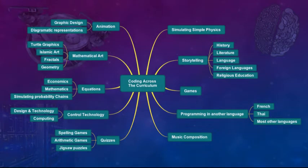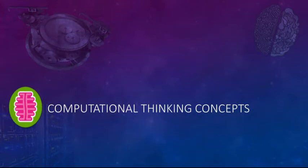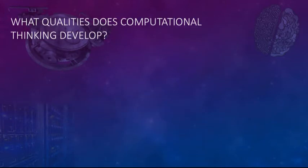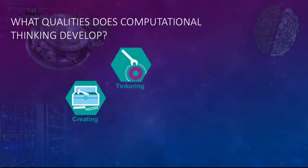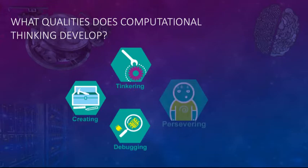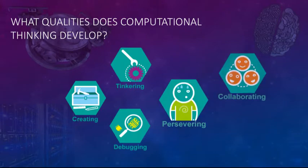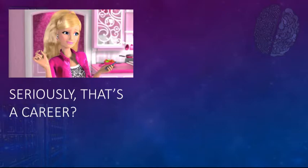Here's a bigger look at the various things that are available. As you can see, there's a huge amount of subjects where computer science, computational thinking, and coding can really help. So let's have a look at the actual underlying concepts. What qualities does computational thinking develop? Creating, tinkering, debugging, persevering, and collaborating.